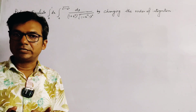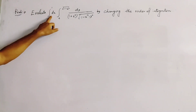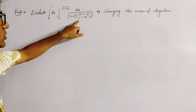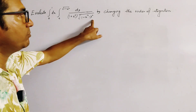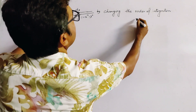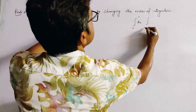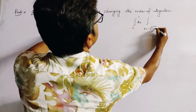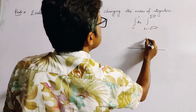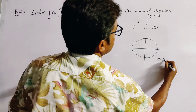This is a problem of double integration. Evaluate the integral from 0 to 1 dx, and from 0 to root(1 minus x squared) dy, divided by (1 plus e to the power y) into root(1 minus x squared minus y squared), by changing the order of integration. If the range of x is minus 1 to 1 and y ranges from minus root(1 minus x squared) to plus root(1 minus x squared), then this is the full circle of radius 1, that is x squared plus y squared equals 1.